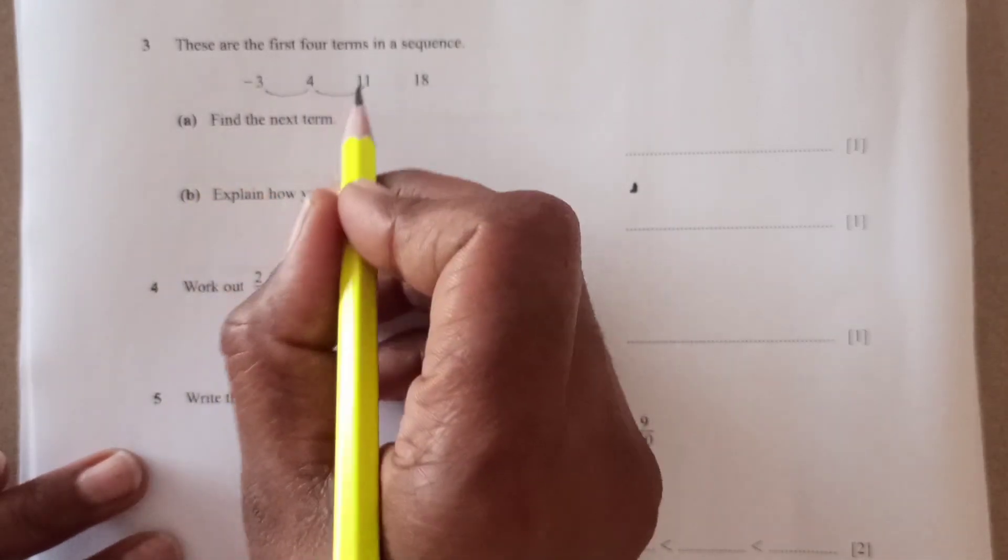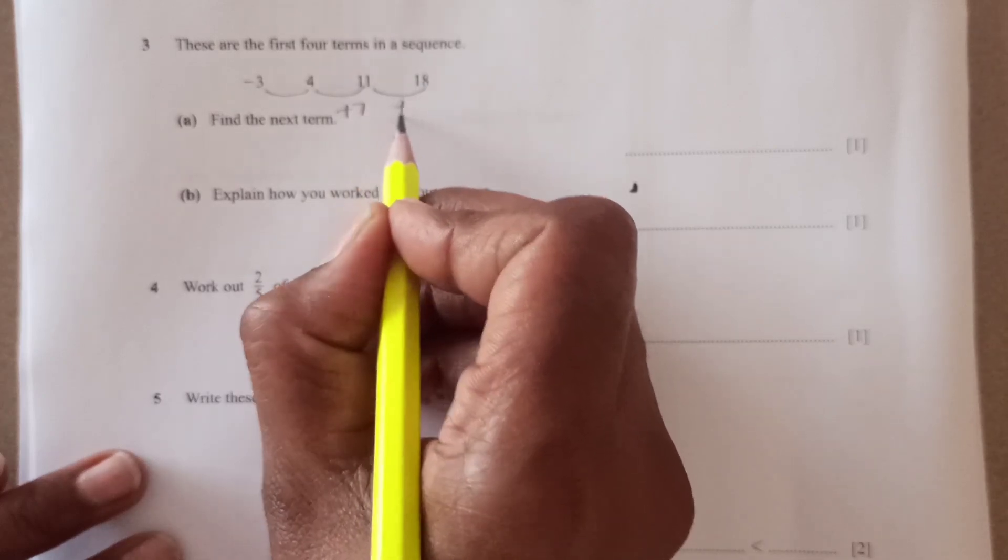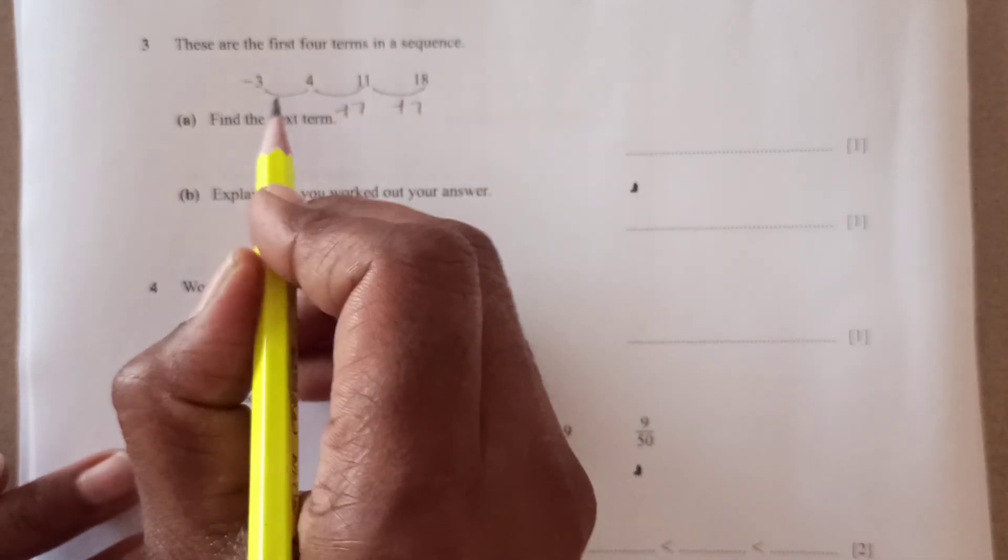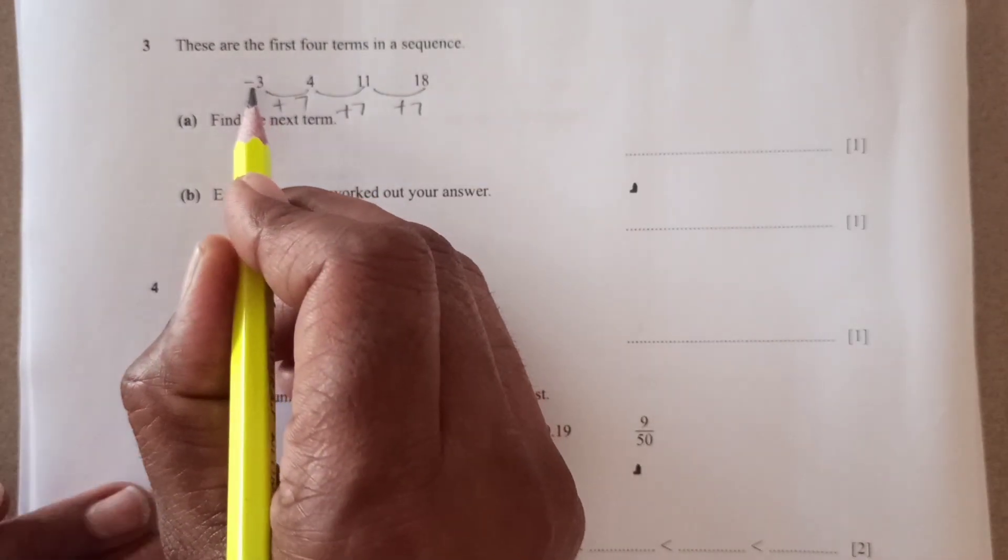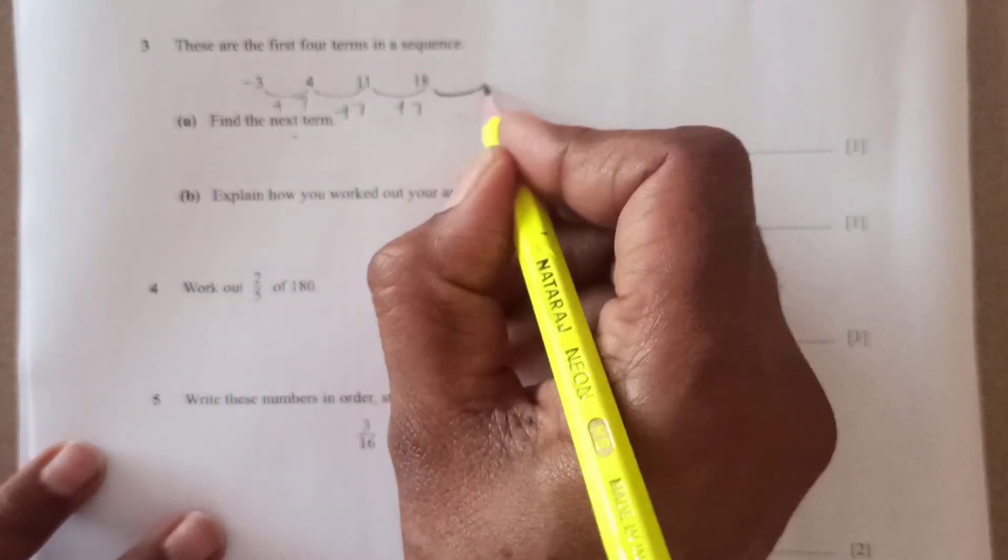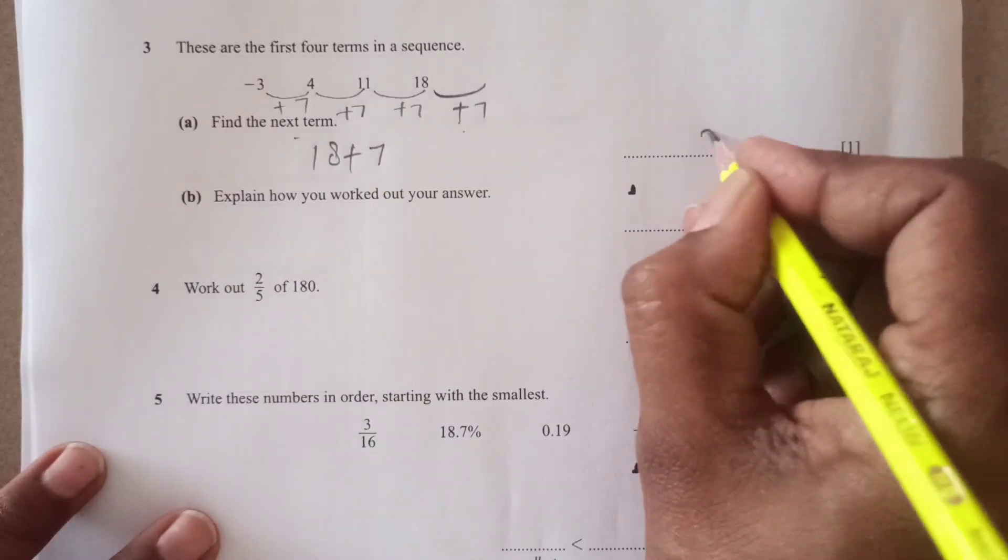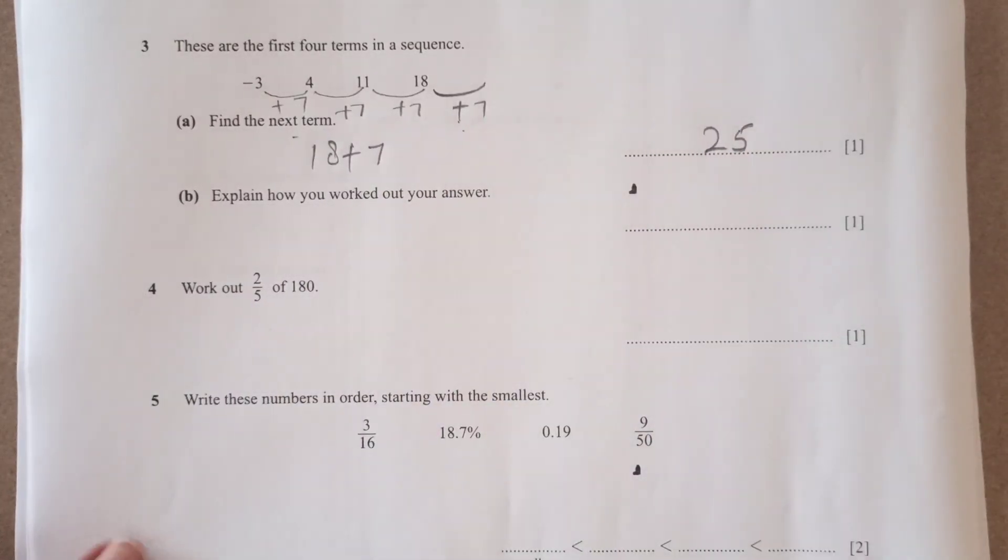So you see from here, maybe it's hard, but here 7, when you add 7, you are going to get next term. When you add 7, 11 plus 7. So same here, negative 3 plus 7, it's 4. Next term is going to be again plus 7. So that is 18 plus 7, that is 25.